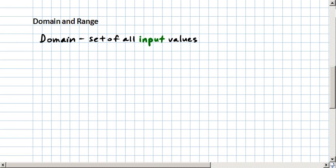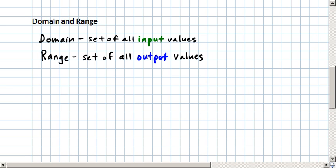The domain of a relation or function is the set of all possible input values and the range is the set of all possible output values.